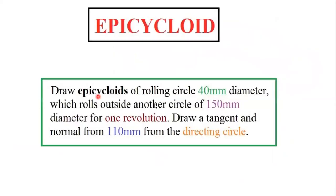Draw the epicycloid of a rolling circle of 40 mm diameter which rolls outside another circle of 150 mm diameter for one revolution. Also draw a tangent and normal at a point 110 mm from the directing circle. From the question, we need to collect two data: the smaller diameter and the greater diameter.